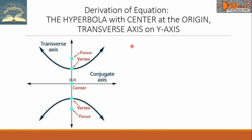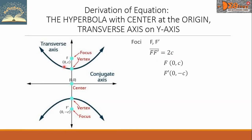Let us now derive the equation. First, let us plot the foci denoted by F and F prime. This is the first focus and this is F prime, the second focus. We take note that the line segment connecting the foci is denoted by 2C. We can write the coordinates of the foci respectively as (0, C) and (0, −C).